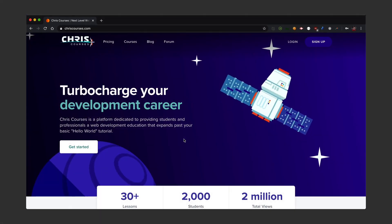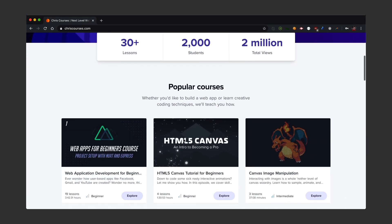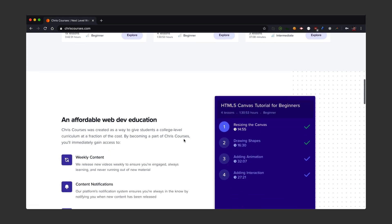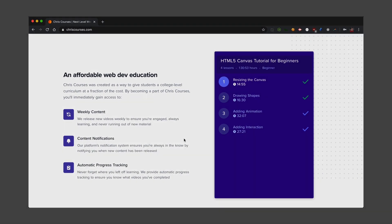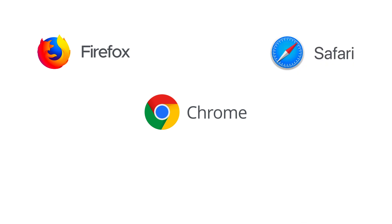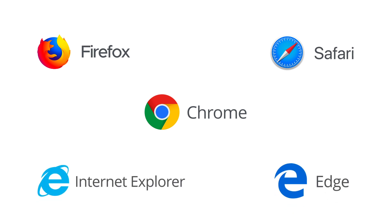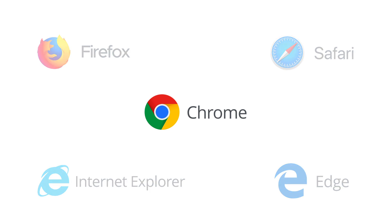A web browser is a program used to visit and interact with websites. You're most likely already familiar with a few of them. The most popular are Chrome, Firefox, and Safari, while a few other browsers lie behind in terms of usage and functionality, such as Edge and Internet Explorer. Most professional web developers will develop and test their sites using Chrome. Google maintains and manages Chrome, keeping it up to date and also providing helpful development tools to make debugging easier compared to other web browsers.